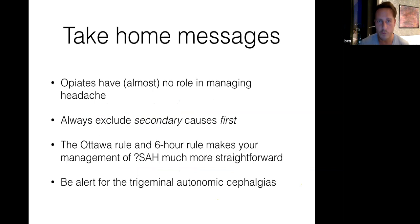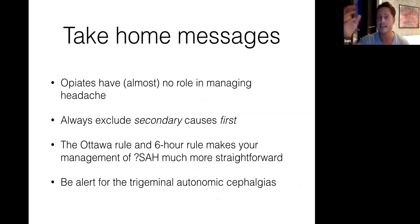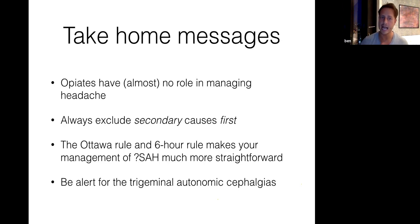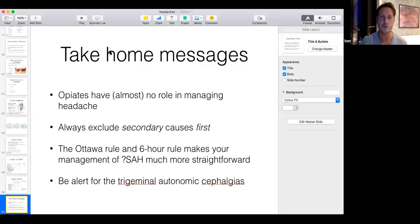That's the end of my talk. Take-home messages: opioids have almost no role in acute headaches. Always exclude secondary headaches first before diagnosing a primary headache disorder. The Ottawa rule and the six-hour CT head rule make management of thunderclap headaches and possible subarachnoid bleeds more straightforward. Always be alert for the trigeminal autonomic cephalalgias because the treatment will be very different. I'll hand back to my moderators for questions.